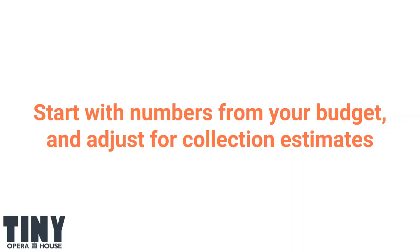The starting point for cash flow is the numbers from your budget. You then look at those numbers and adjust for when you think that money is actually going to get deposited in your bank account. Cash flow is only concerned about when things end up in the bank. If you are using accrual accounting, this is where those numbers can be different. If someone says they're going to give you $10,000, you might record that as revenue this month, but you might not get a deposit in the bank until November. On the cash flow, you take that number from your budget and move it over to November, since that's really when the money is going to come in.